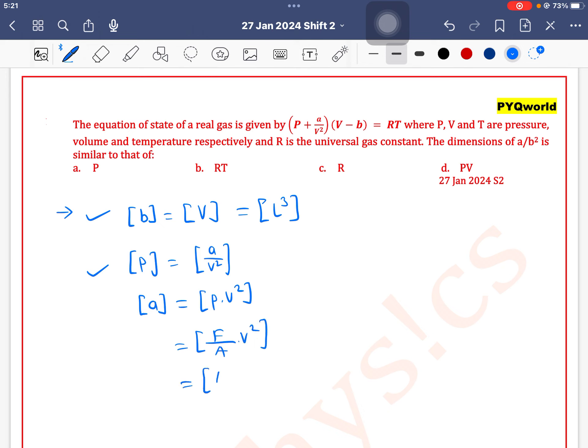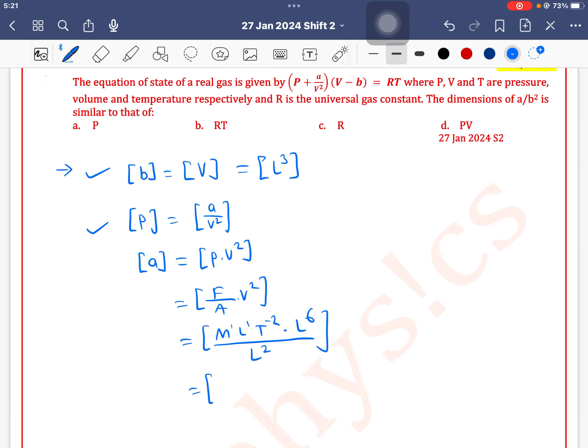Pressure is force upon area into V square. Force is M1 L1 T minus 2. Volume is L cube. L cube ka power 2 is L6 divided by area. Area is L2. So this will be equal to M1 L1 L6 L7 minus 2 to L5 T to the power minus 2. So this is dimension of A.